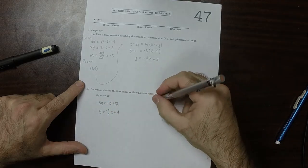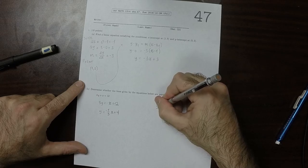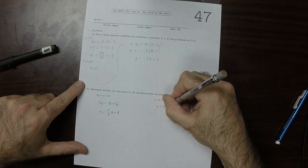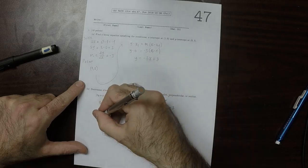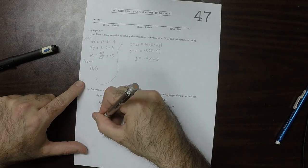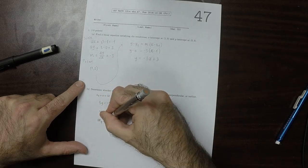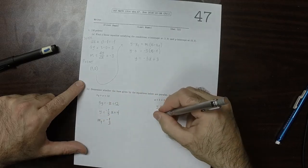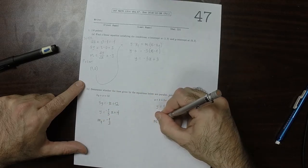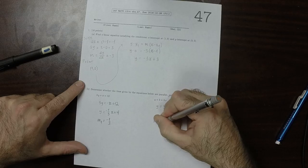For this one, y is 3x minus 3. So the slope of this line, if I call it slope 1, is negative 1 third. And the slope of this line is 3.